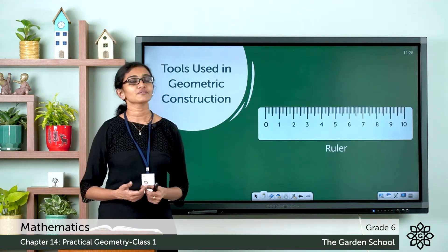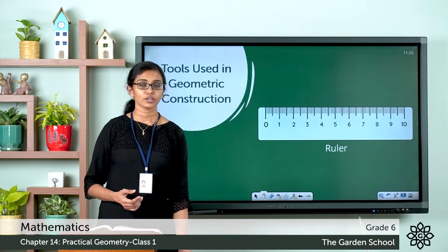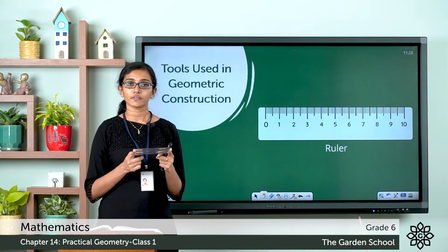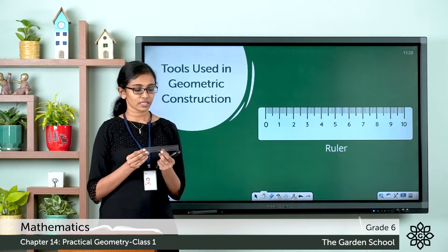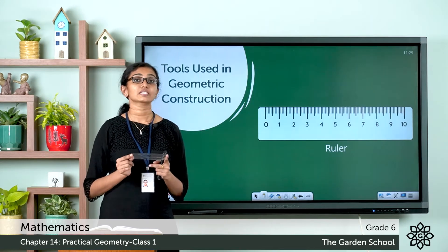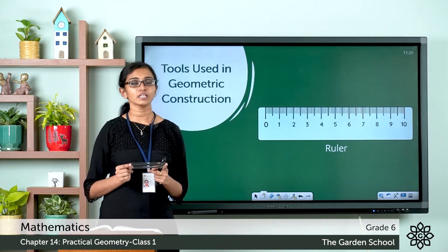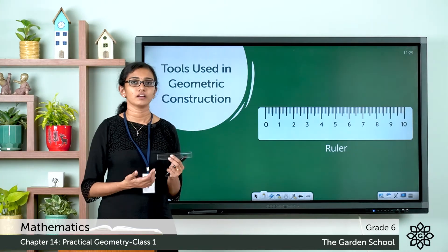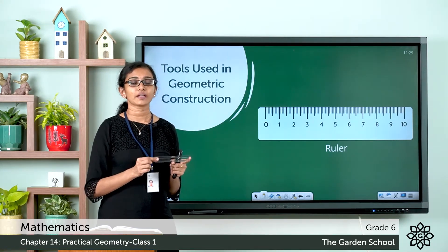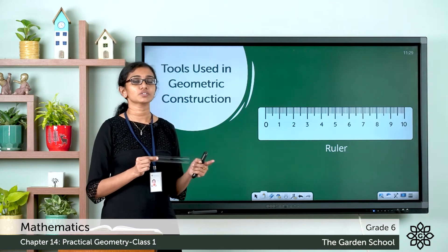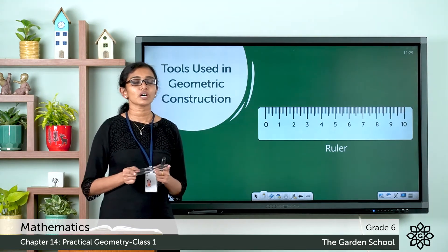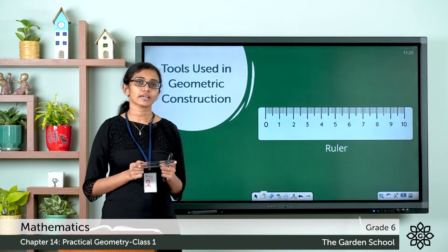You all are familiar with a ruler. You have seen and used a ruler like this. You can see there are two sets of markings. A ruler is a strip of wood or other material having a straight edge, and usually centimeters and inches are marked off on it. We use a ruler to draw and measure lines.